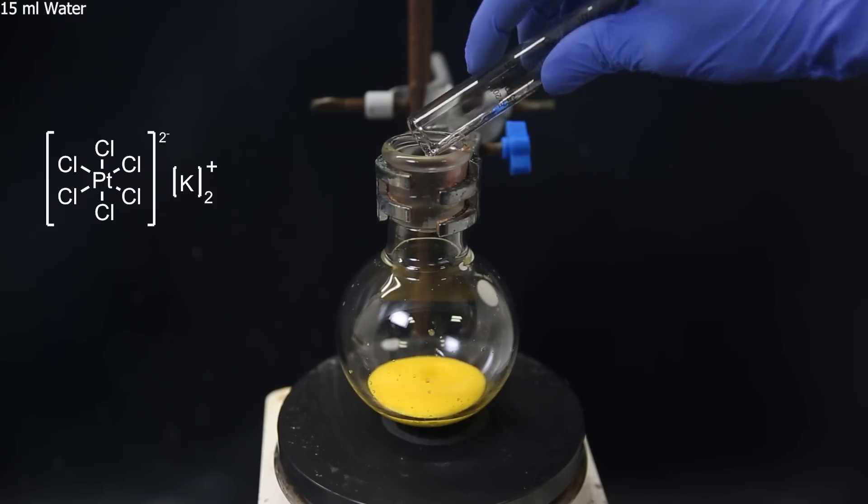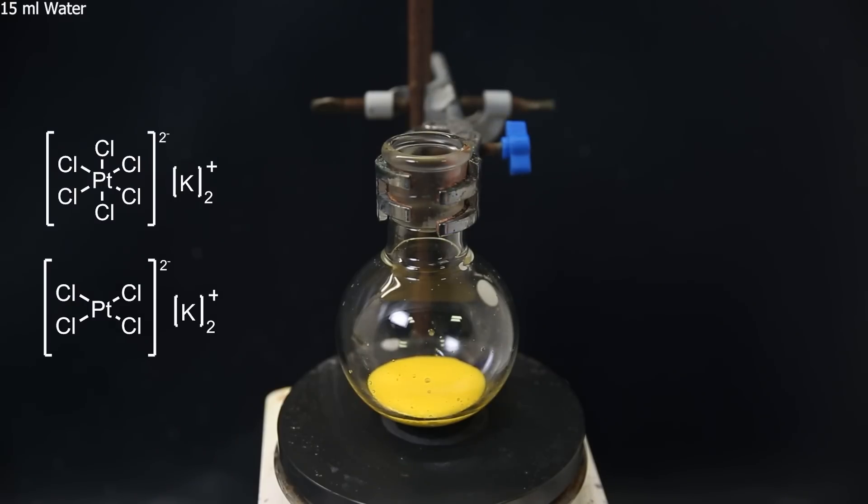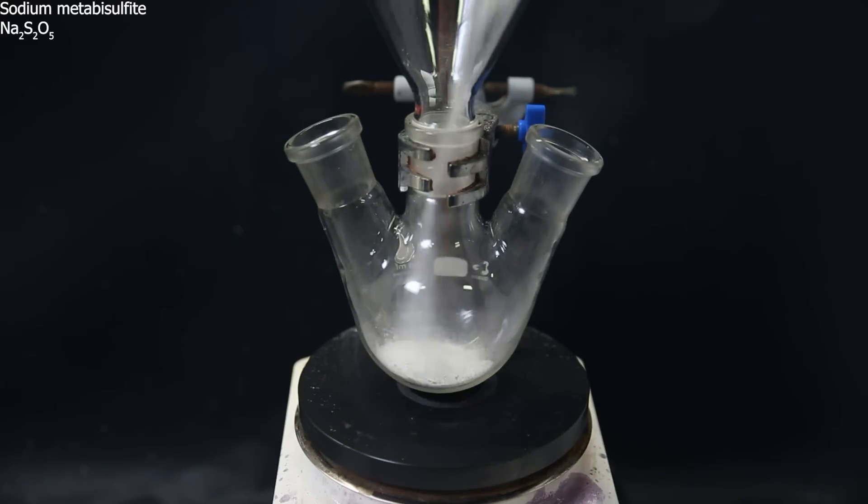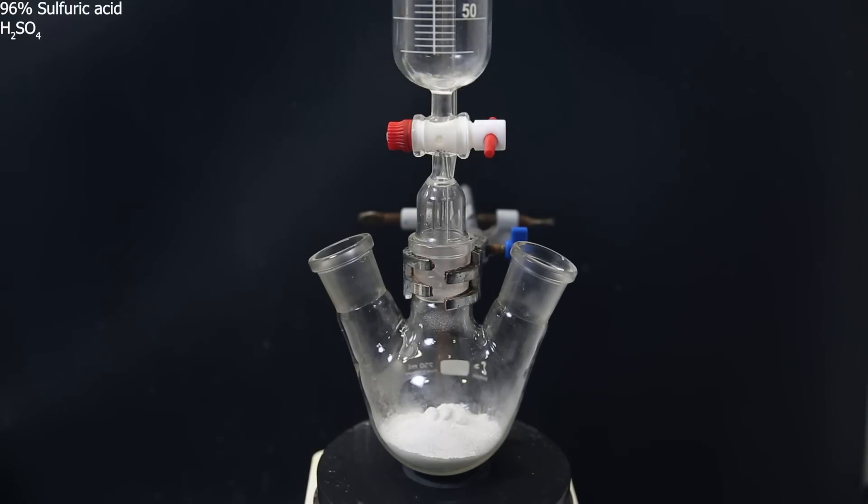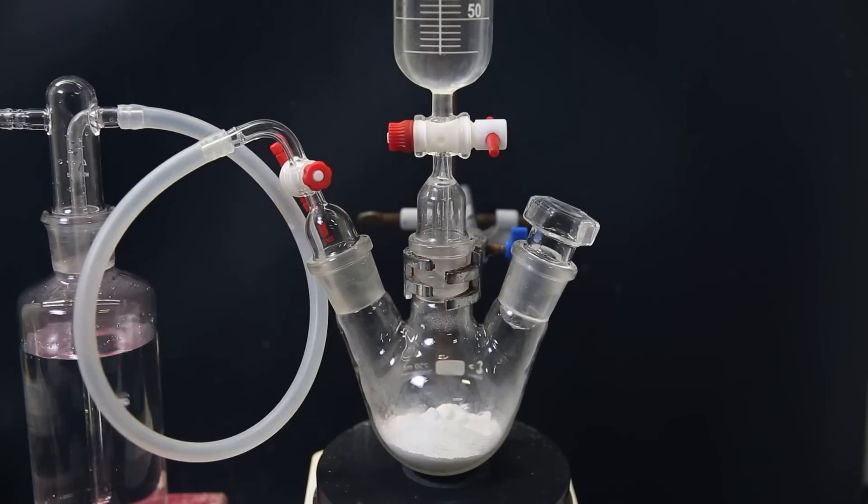Now to reduce the hexachloroplatinate to tetrachloroplatinate, I will have to prepare a solution of sulfur dioxide. So I set up a flask with a funnel and add in a random amount of sodium metabisulfite. Then on top, I add a dropping funnel, and into that, I add a random amount of concentrated sulfuric acid. I then attach a stopper and a gas adapter. And through the gas adapter, I connect a hose that leads to a gas washing bottle filled with water.